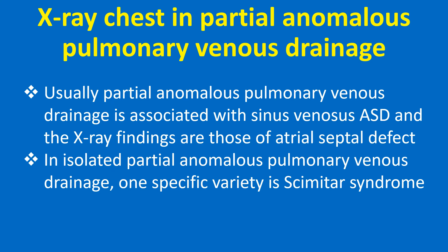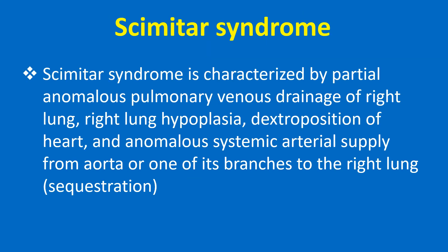Usually, partial anomalous pulmonary venous drainage is associated with sinus venosus ASD and the X-ray findings are those of ASD. In isolated partial anomalous pulmonary venous drainage, one specific variety is Scimitar syndrome. Scimitar syndrome is characterized by partial anomalous pulmonary venous drainage of the right lung, right lung hypoplasia, dextroposition of the heart, and anomalous systemic arterial supply from the aorta or one of its branches to the right lung.